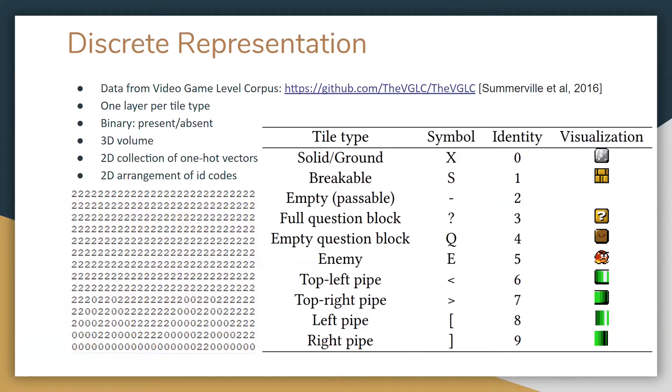What we see is the result of taking a random walk through the induced latent space. You have these random number inputs to the generator, and each input generates an output. There are some places between interesting outputs that are kind of weird in-between steps, but we're generating lots of convincing faces of fake people. This was finally published in 2018 but we knew about it in 2017.